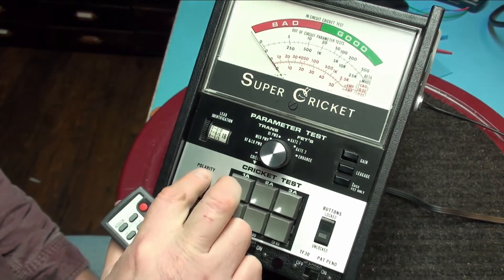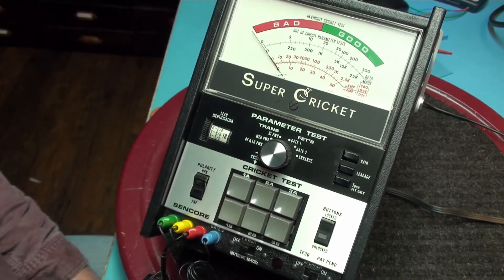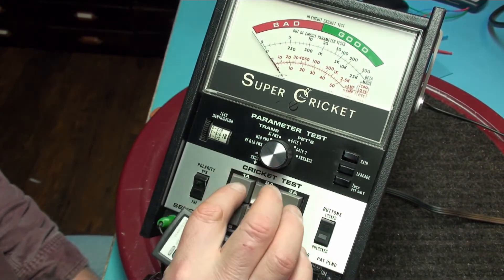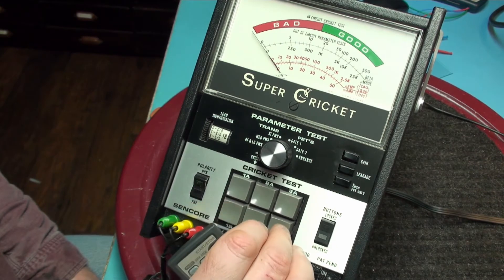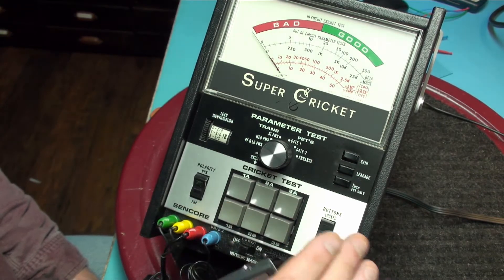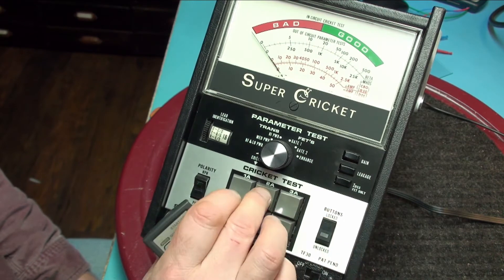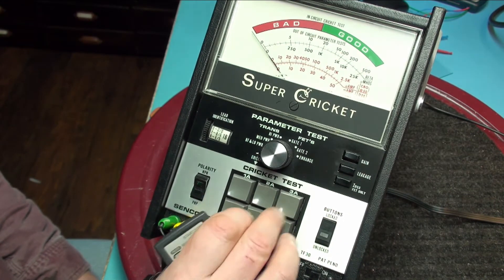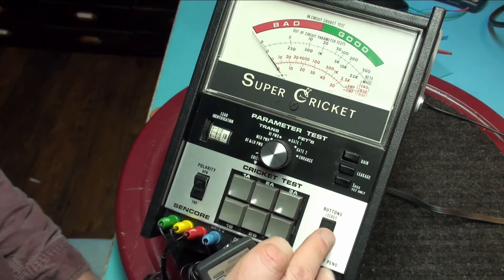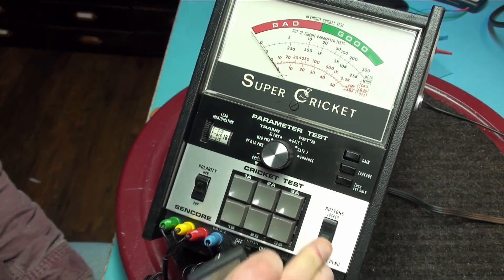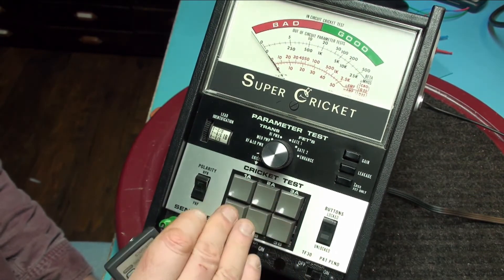Down here we have the polarity switch. Here are the Cricket test buttons, there's six of them. And this is a lock button so that when this is engaged this will keep whatever button you press lock down. When you let it go all the buttons are released.